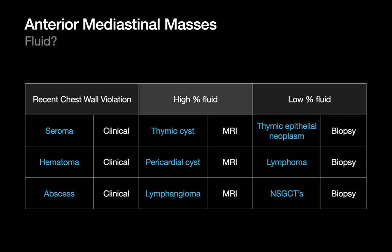Fortunately, when fluid presents in the setting of an anterior mediastinal mass, there's enough specificity in the different presentations to permit us to winnow down the differential diagnoses. If you see an anterior mediastinal mass containing fluid in the setting of recent chest wall violation — trauma or surgery — the likelihood that it's a seroma, hematoma, or abscess is much higher. If the mass is mostly fluid with no recent chest wall violation, it's very likely a thymic cyst, pericardial cyst, or lymphangioma.